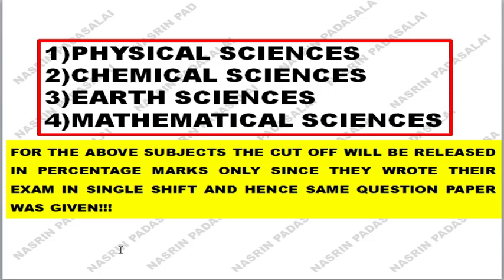With respect to the CSIR examination, there are five subjects: Physical Sciences, Chemical Sciences, Earth Sciences, Mathematical Sciences, and Life Sciences. For Physical Sciences, Chemical Sciences, Earth Sciences, and Mathematical Sciences, the cutoff is released in percentage marks only — because all these students wrote their exam in a single shift with the same question paper.